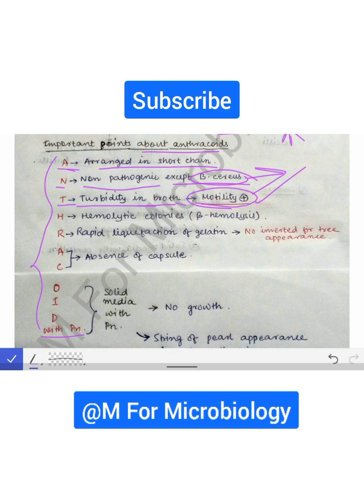So turbidity in broth indirectly means motility is present, and once motility is present, that means there is flagella. H means hemolytic colonies, which causes beta hemolysis on plate agar. R means rapid liquefaction of gelatin, so we cannot see any inverted...